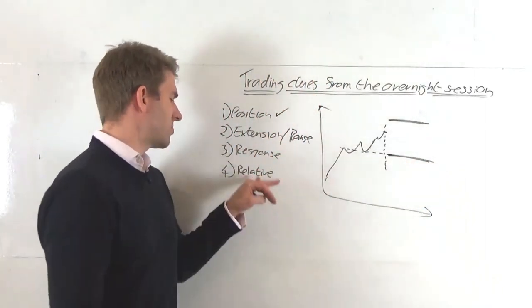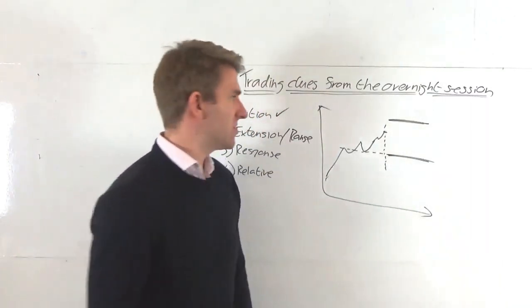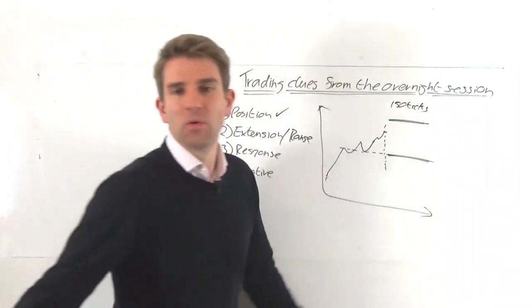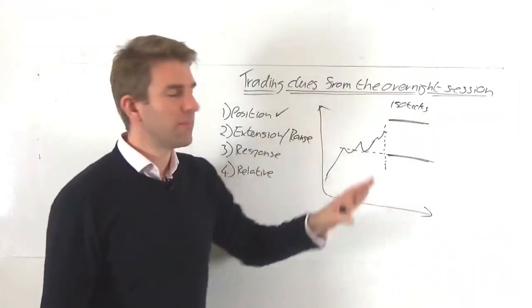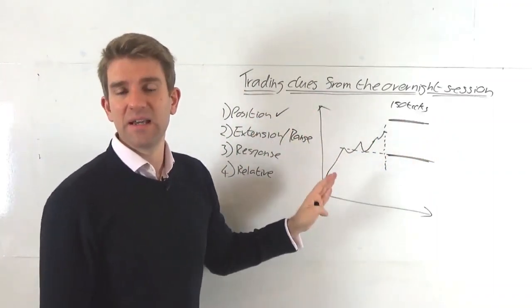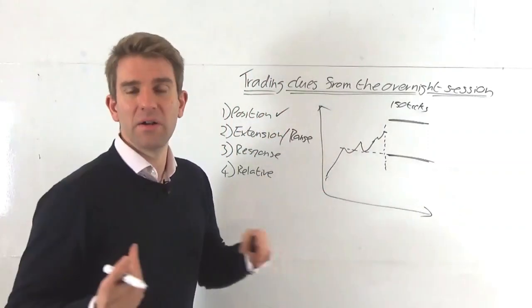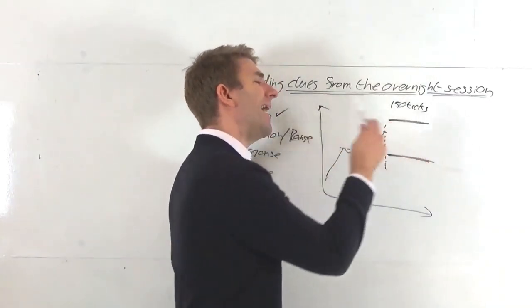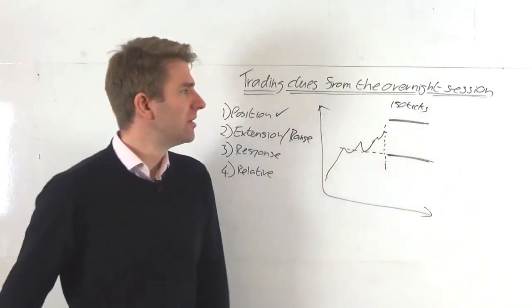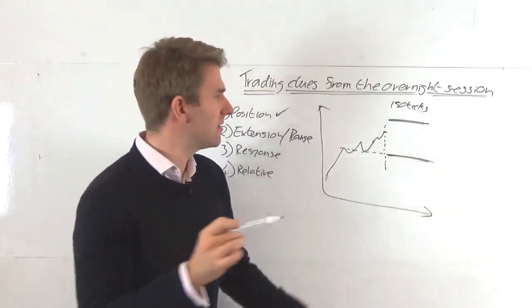We'll do relative and response together. Relative is asking: what's the normal overnight session? Let's say the normal overnight session is about 150 ticks — on the Dow or S&P 500, could be pips, doesn't matter. Normal meaning what has it been for the last five, ten, or thirty days — up to you — but we want to look at it in the window of the current environment. So we know the high and low is going to be about 150 ticks, and we're expecting at least that, if not more, because of the interesting prior day.